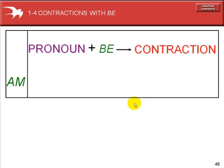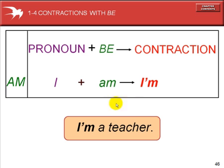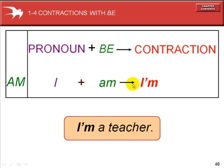I'm a teacher. Now we're using contractions. Contractions use the form of an apostrophe, which takes the place of the letter A in 'am'. I plus am becomes I'm. I'm a teacher — same meaning as I am a teacher.